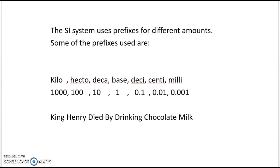These prefixes all correspond to numbers which are right in front of you. So if you had kilometers, you'd have 1,000 meters. If you had decagrams, you'd have 10 grams. If you had centiliters, you'd have 0.01 liters — so less than 1 liter. We're going to use this to convert.